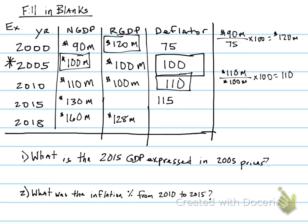For the year 2015, I need to calculate the real GDP again. I take the nominal of $130 million, divide that by my deflator of 115, times 100, and that gives me an answer of approximately $113 million. So my real GDP for 2015 is $113 million.